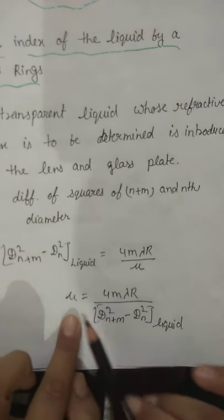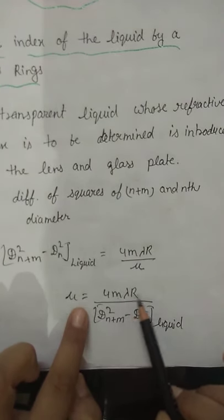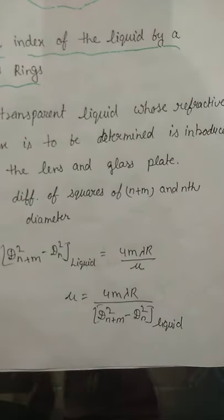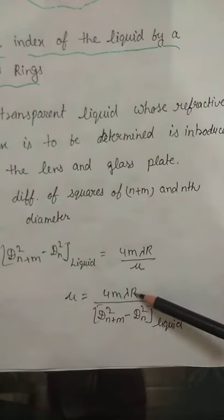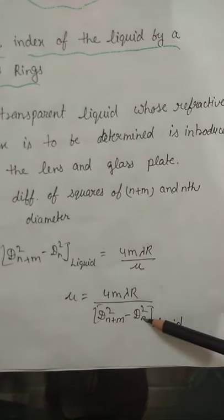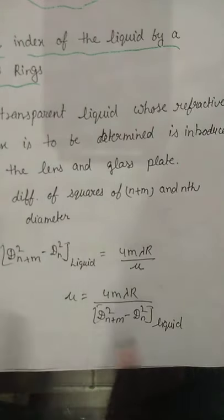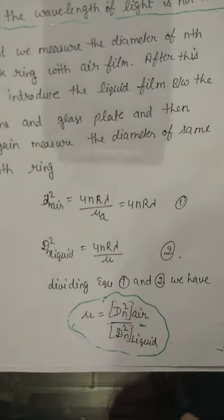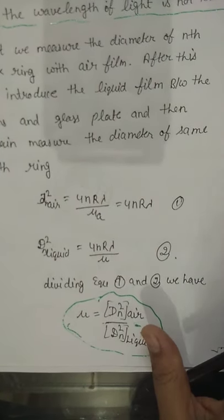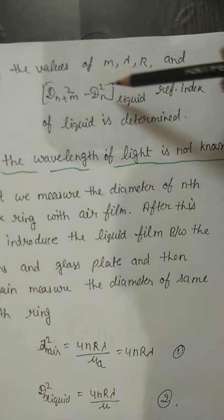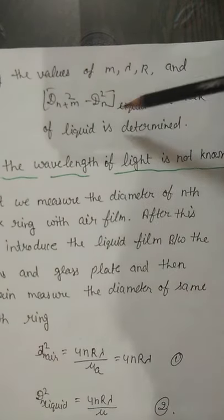The formula for the liquid film gives: D_(n+m)² minus D_n² for liquid equals 4m × lambda × R / mu. Earlier we used air film so mu was 1, but now for liquid film mu is unknown. Rearranging, mu = 4m × lambda × R / (D_(n+m)² - D_n²) of liquid. Knowing the values of m, lambda, R and D_(n+m)² minus D_n² of liquid, the refractive index of the liquid is determined.